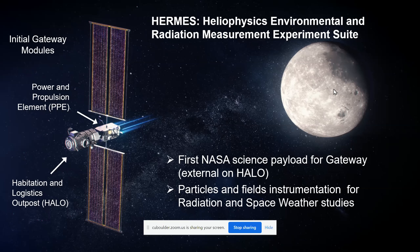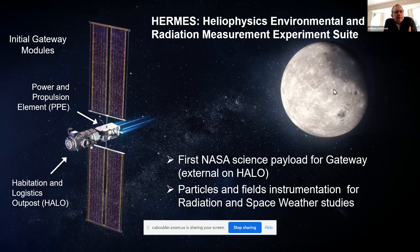Beyond that, we have a set of science objectives, and mission operations and achieving the science will pretty much be up to NASA norms. The picture here shows the first two Gateway modules going to be launched together — called the co-manifested vehicles — presumably entering lunar orbit. Hermes is going to be on the HALO module; it was originally proposed to be on the power and propulsion element, but that wasn't very good for our science.